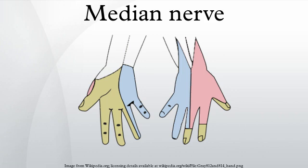The median nerve is a nerve in humans and other animals in the upper limb. It is one of the five main nerves originating from the brachial plexus. The median nerve is formed from contributions from the lateral and medial cords of the brachial plexus, originating from ventral roots of C5, C6, C7, C8, and T1.